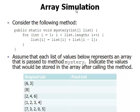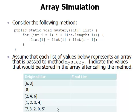This problem involves array simulation. We're given the code for a method called mystery, which is passed an array of ints as a parameter, and we're asked to hand simulate what the code does. We're given various scenarios here — different arrays that will be passed to the method — and we're asked to figure out for each of these what values will be stored in the array when the code is done executing. So let's go through each one of these in turn.